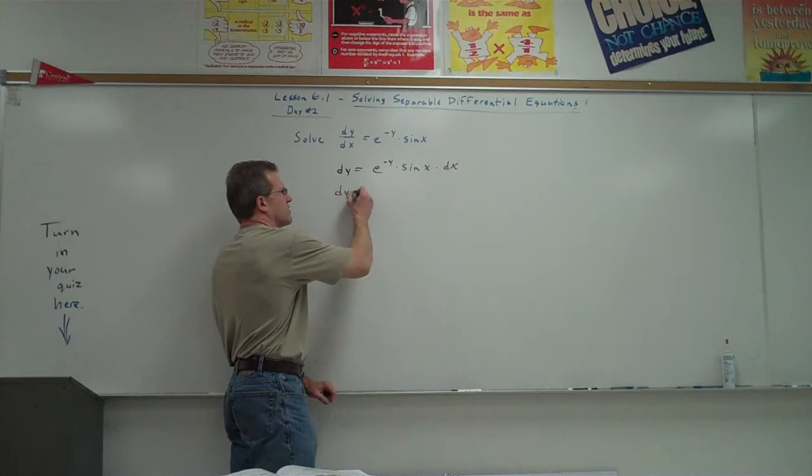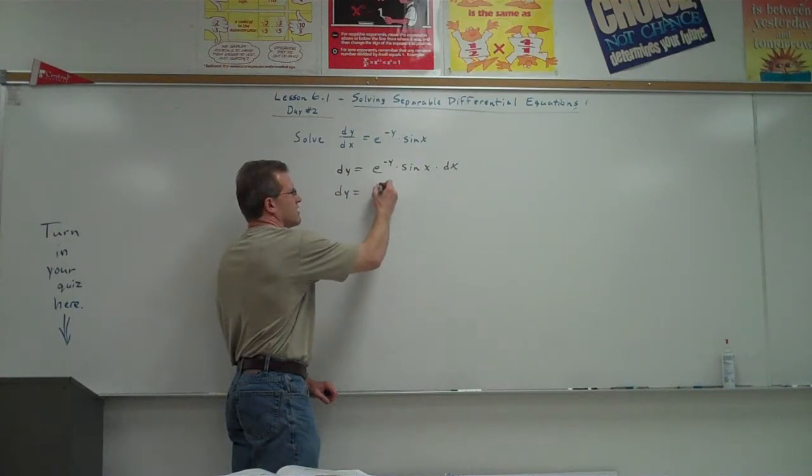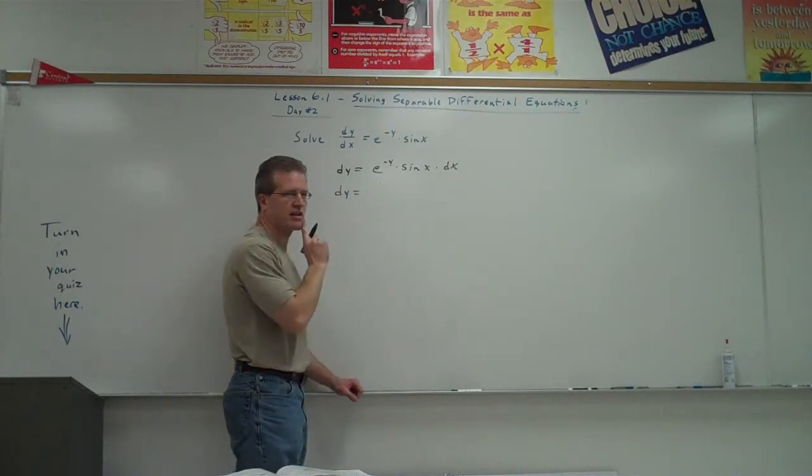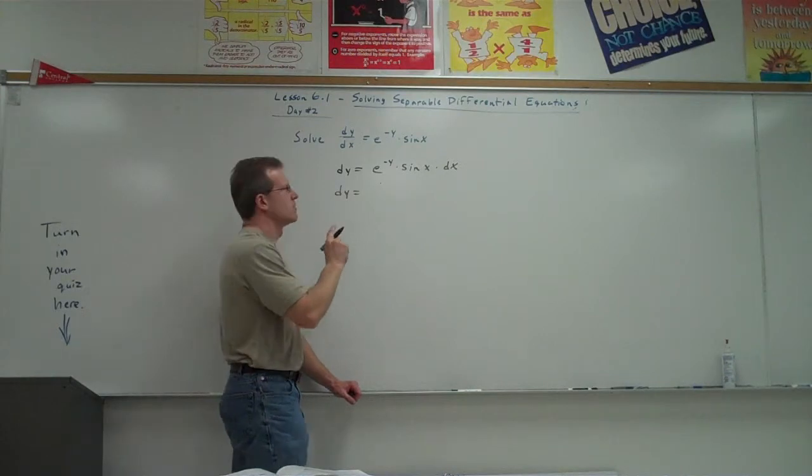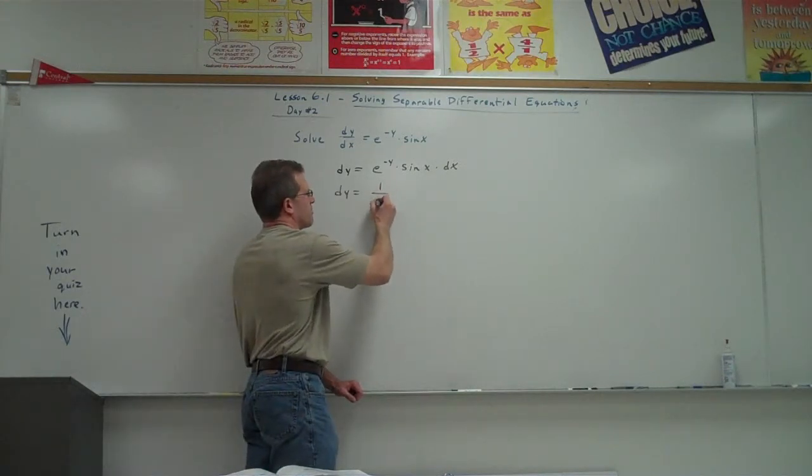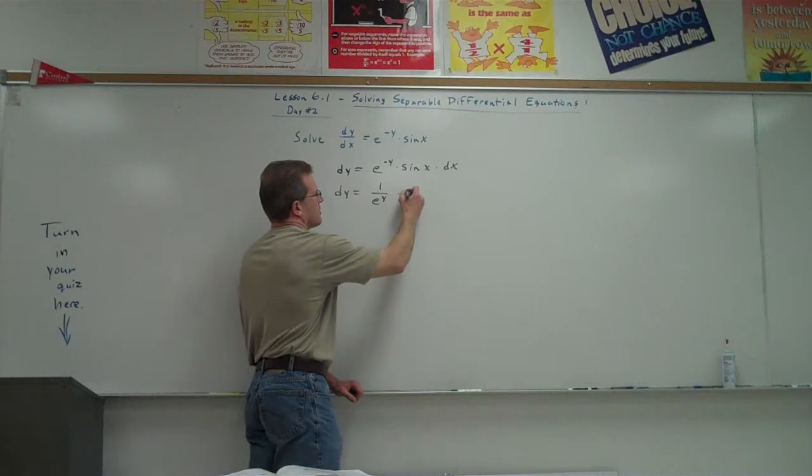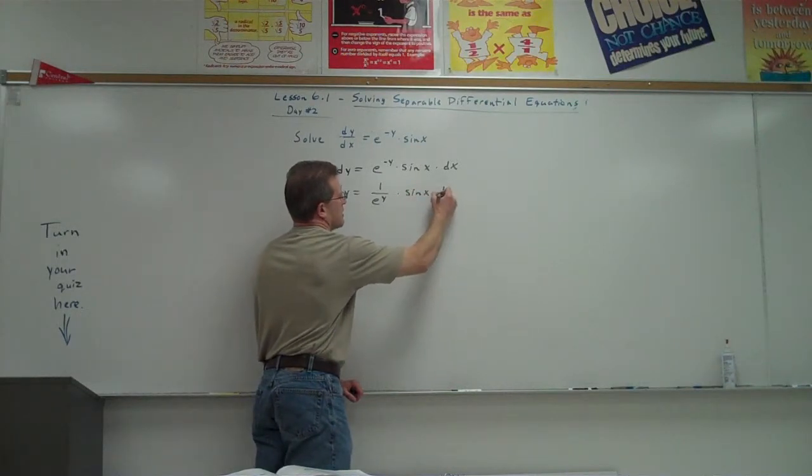Now I'm going to get all the y's to the left. It might be helpful to do this. Rewrite e to the negative y as... Anyone know how I can rewrite that so it's not a negative exponent? 1 over e to the y. 1 over e to the y, yeah. And now it's not negative anymore, times sine of x.